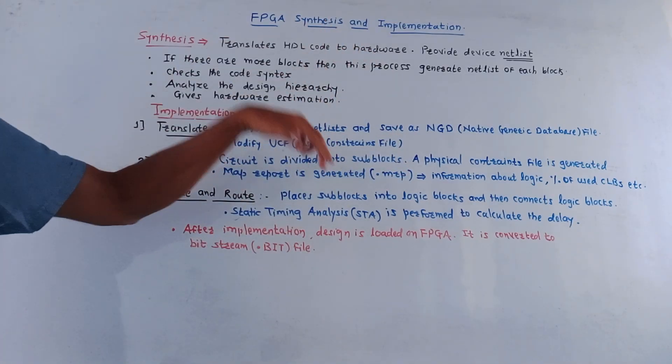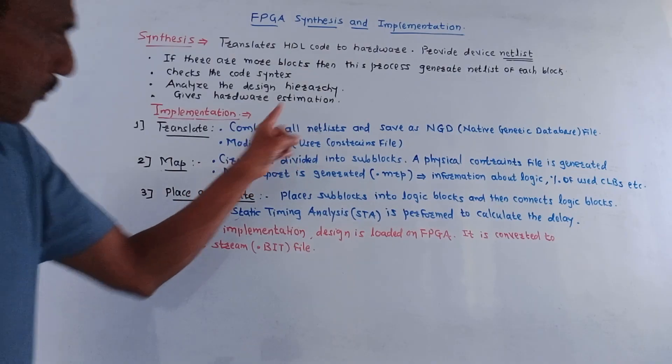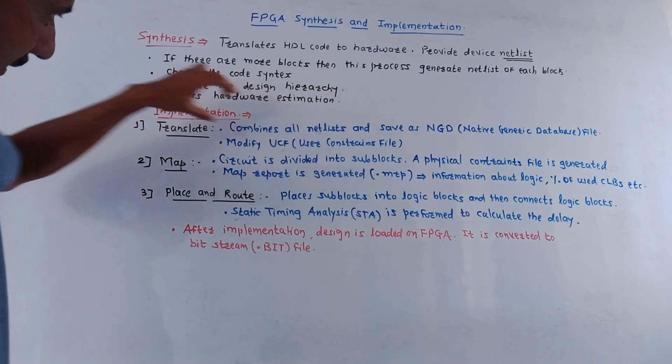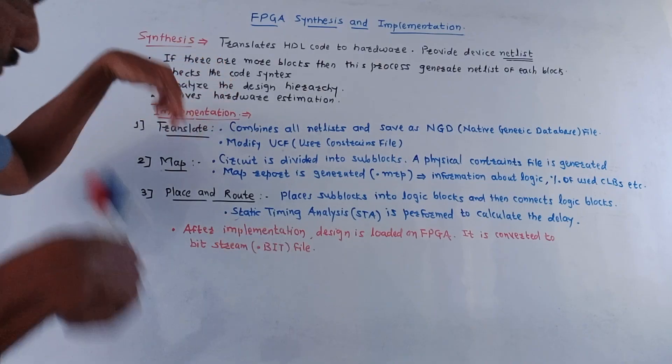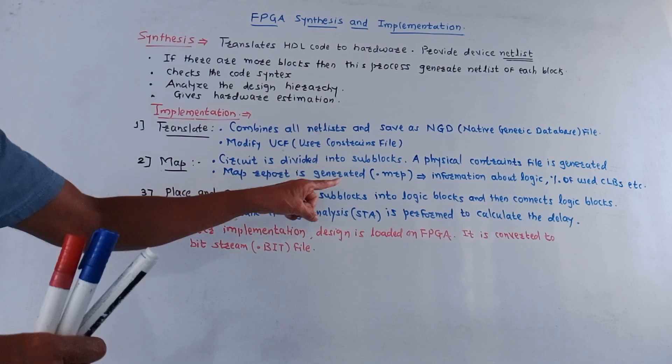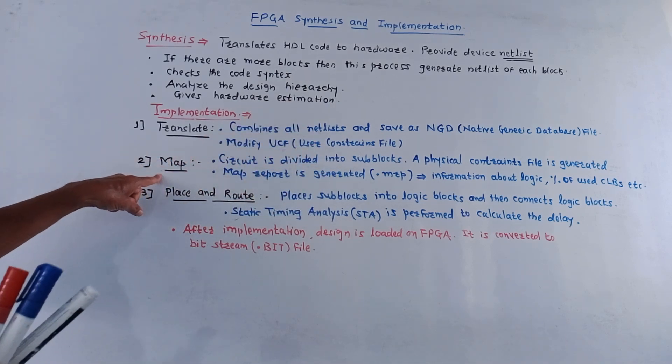So it modifies UCF. UCF means user constraint file. This UCF user constraints file assigns ports to the physical elements. So in this step translate means it is used to modify the UCF which is used to assign different ports to the physical devices.